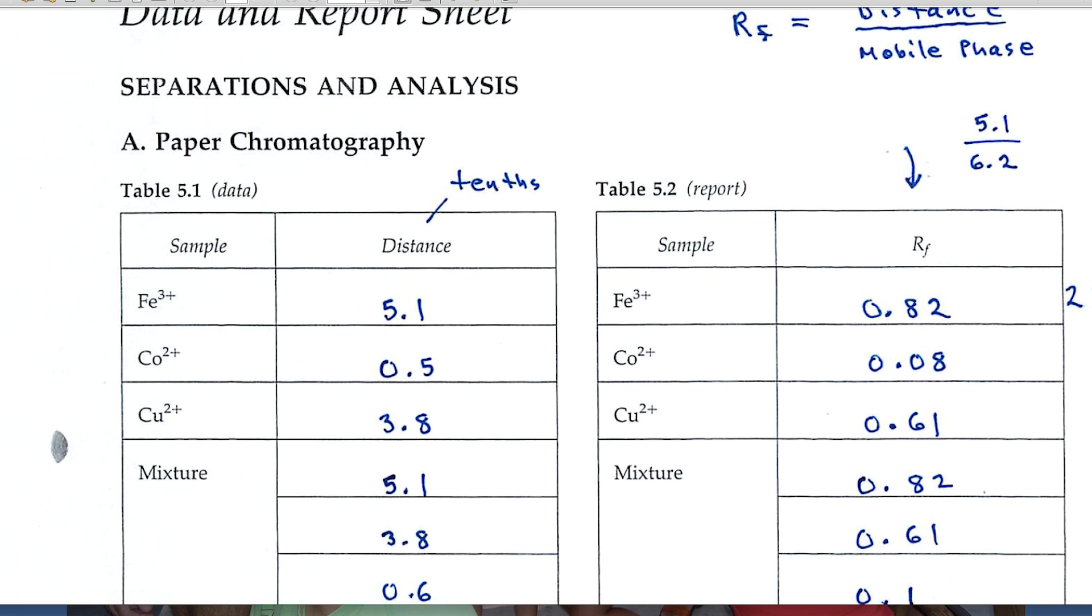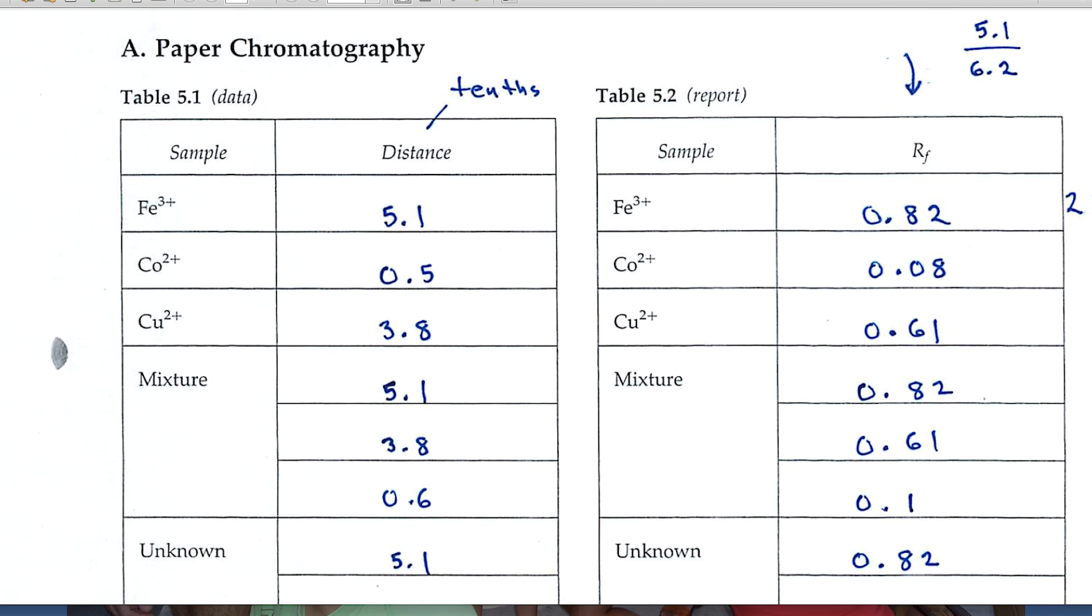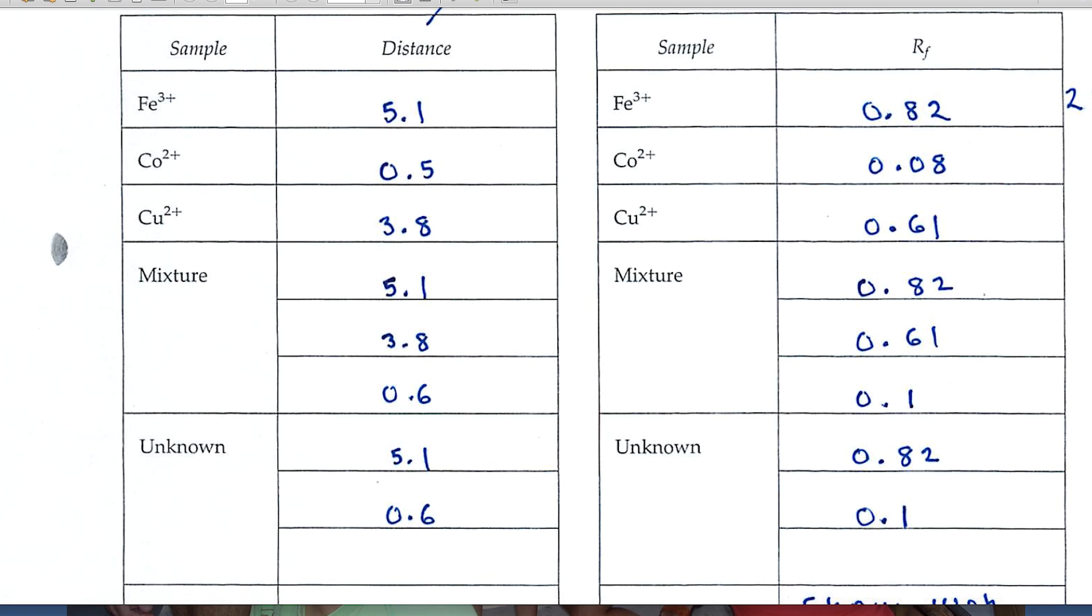So let's look at the data and report pages. This experiment deals with paper chromatography where you'll be using a piece of paper to separate a mixture of ions, and the ions are placed near the bottom of the paper. The paper is then put into a chamber with a solvent in the bottom, and as the solvent climbs the paper it carries the ions with it and they separate according to their solubility in the traveling solvent or the mobile phase.